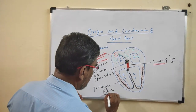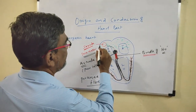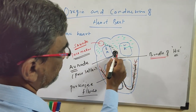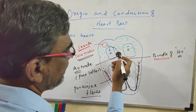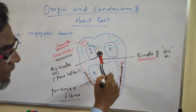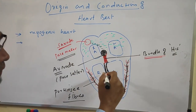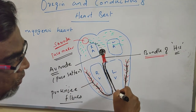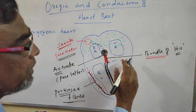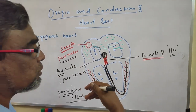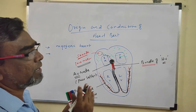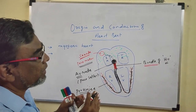Through Purkinje fibers, the electrical impulses spread through the ventricles of the heart, causing contraction of the heart to take place. The electrical impulses start from the SA node, pass to the AV node, then to the bundle of His, then through two branches to the ventricles via Purkinje fibers. We will discuss how contraction takes place in the muscles of the heart in detail in the next chapter.